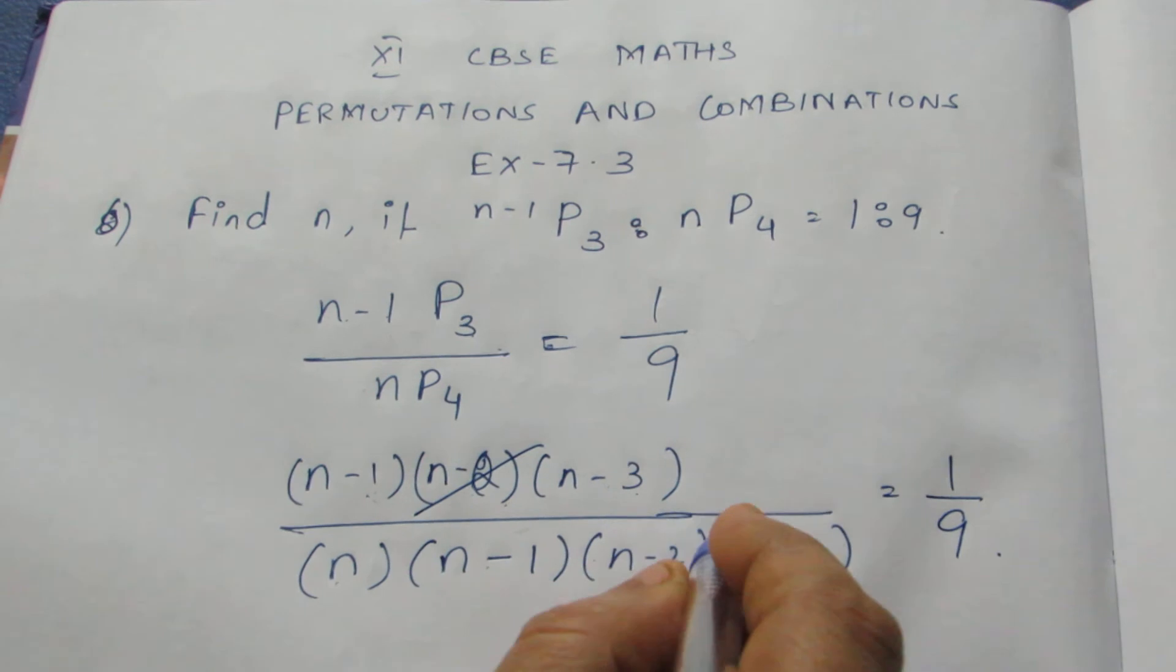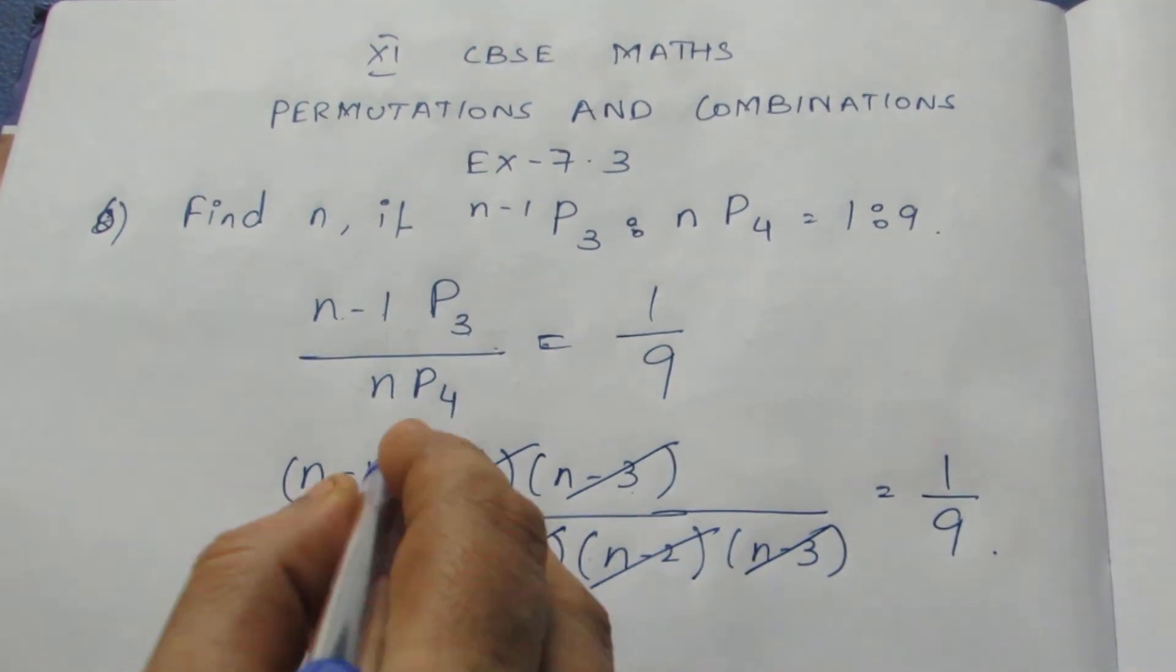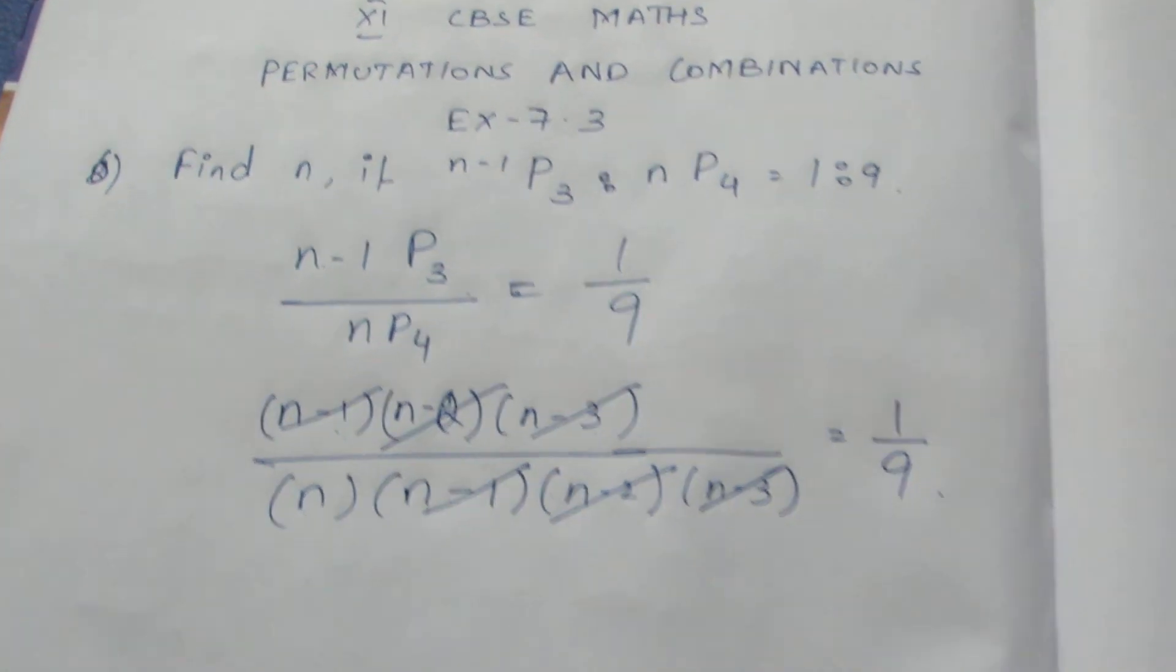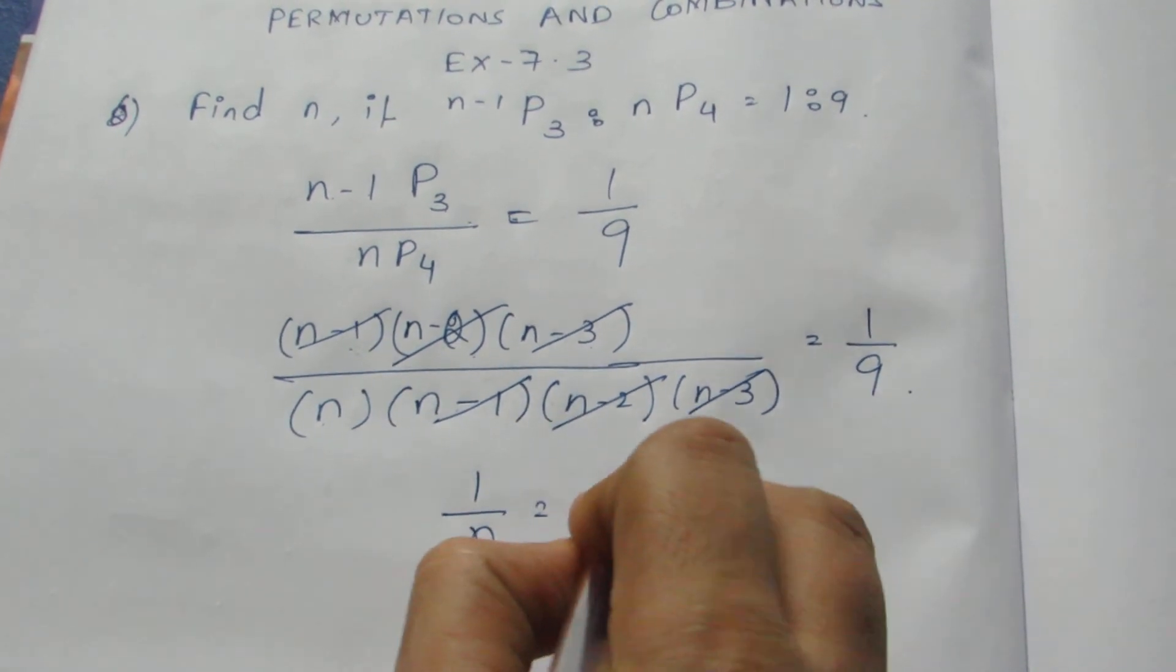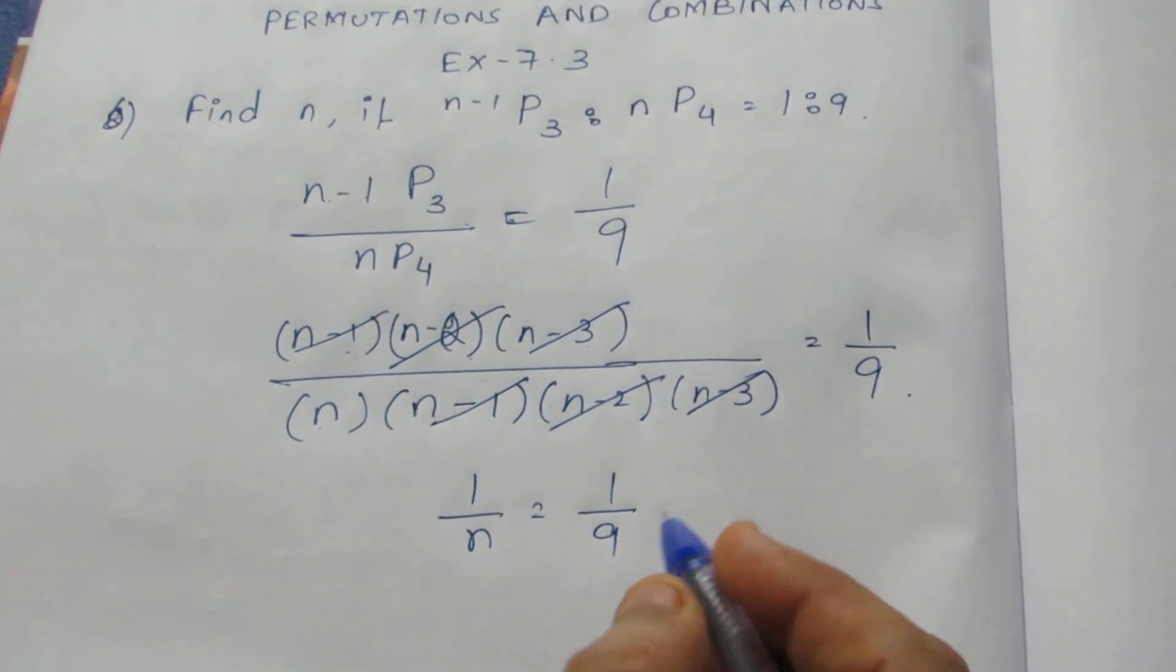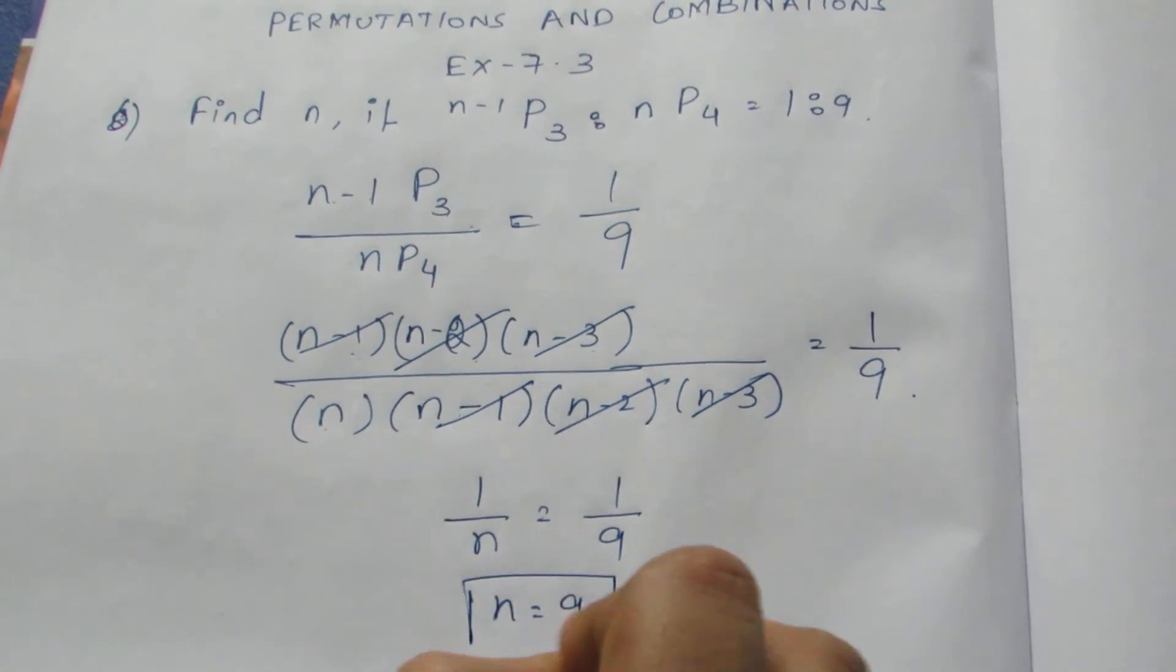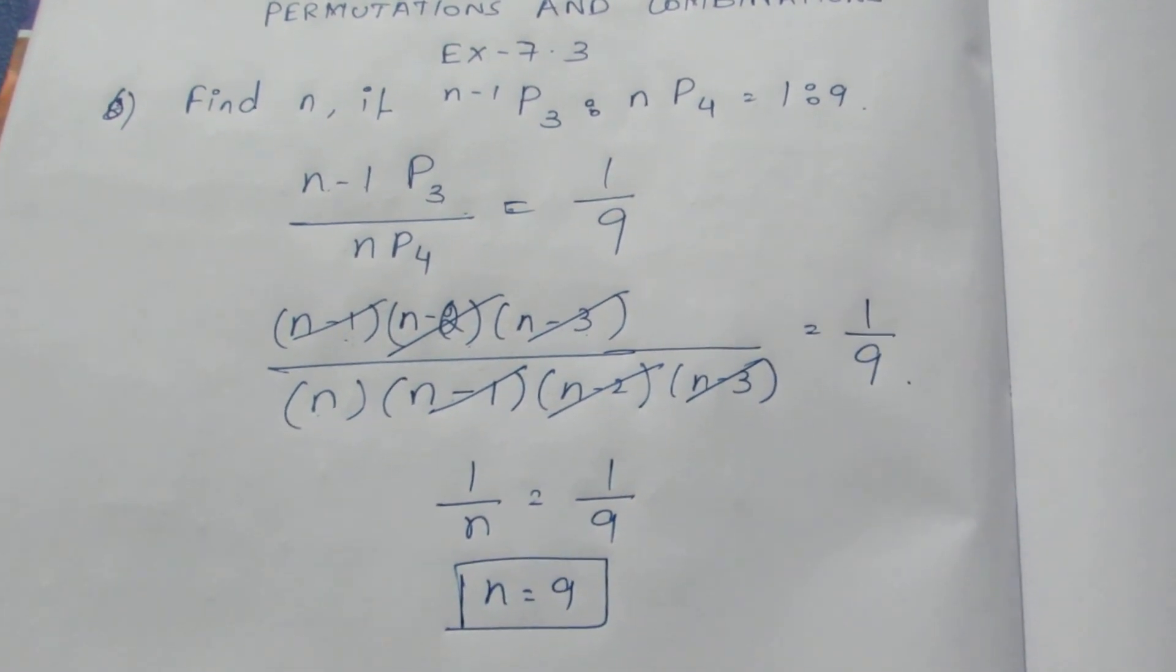Now these terms get cancelled. This simplifies to 1 by N equals 1 by 9. If I cross multiply, I get N equals 9. They asked us to find N.